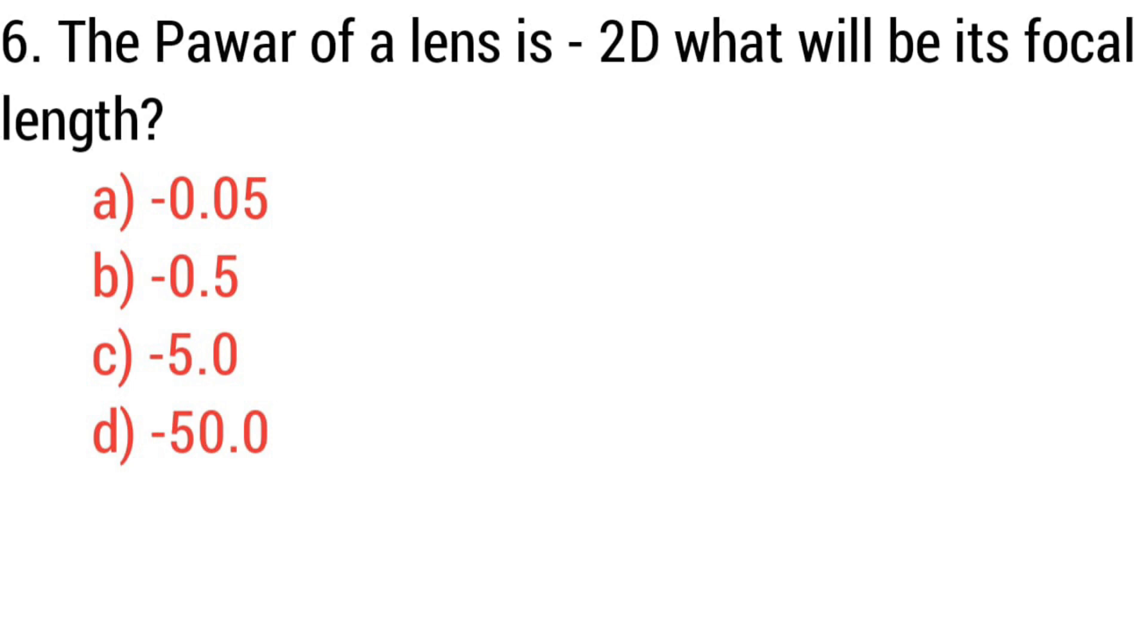Question 6. The power of a lens is minus 2 diopter. What will be its focal length? Answer: Option B, Minus 0.5.